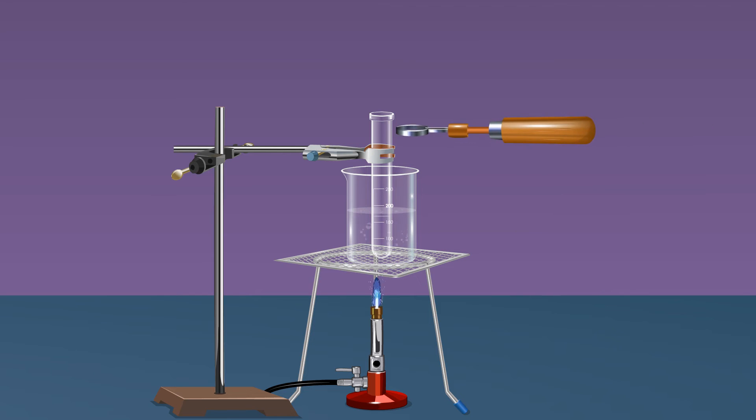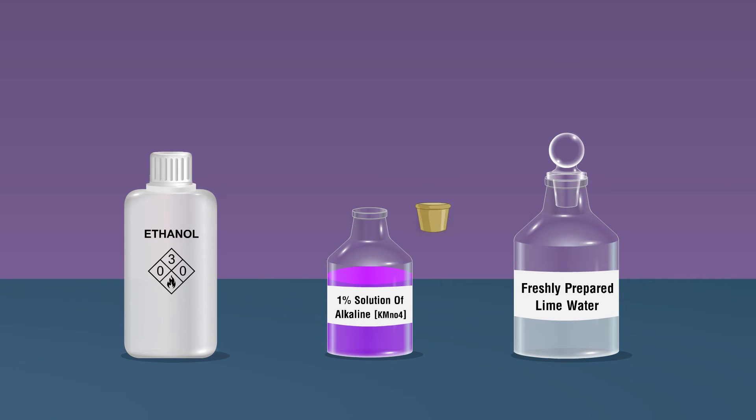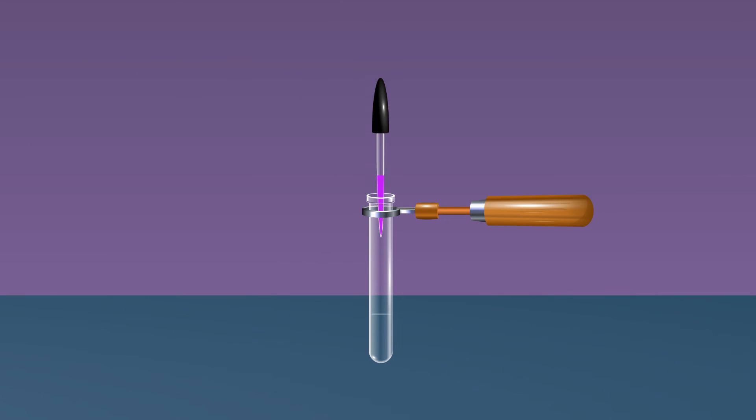Unclamp the boiling tube from the stand and use a boiling tube holder to hold the boiling tube. Take alkaline KMnO4 solution using a dropper to the boiling tube. Add 2 or 3 drops of 1% alkaline KMnO4 solution. The purple color gets decolorized.